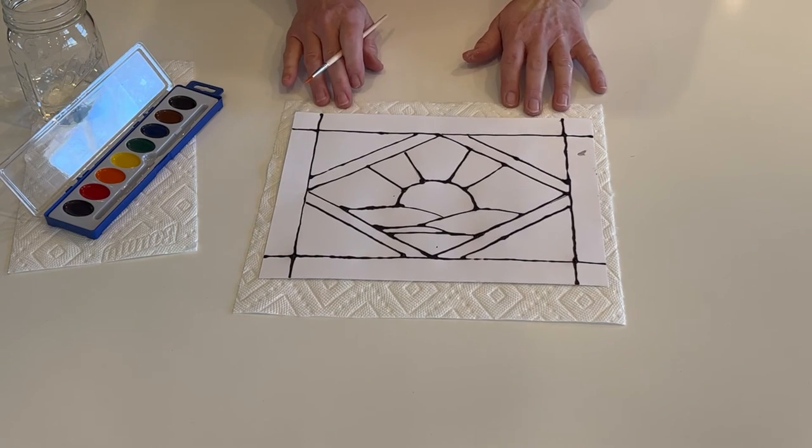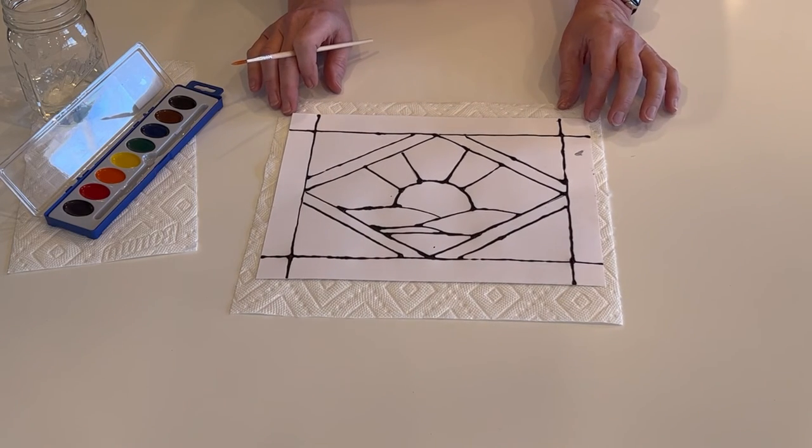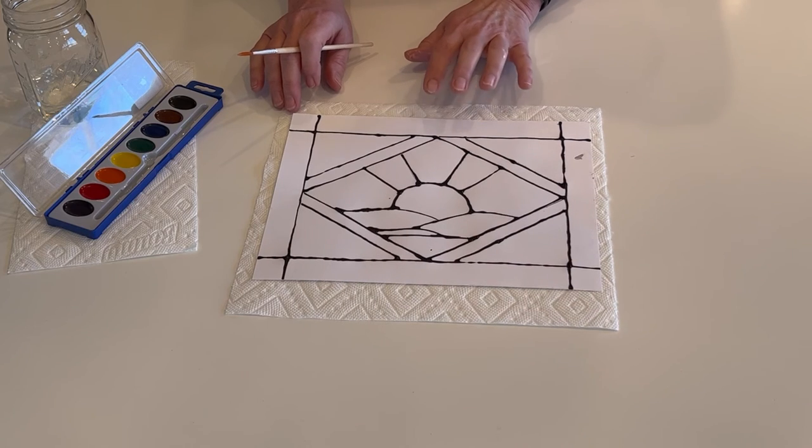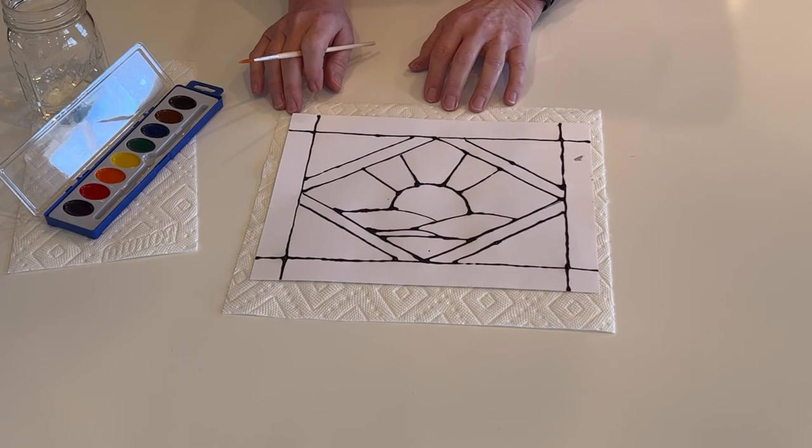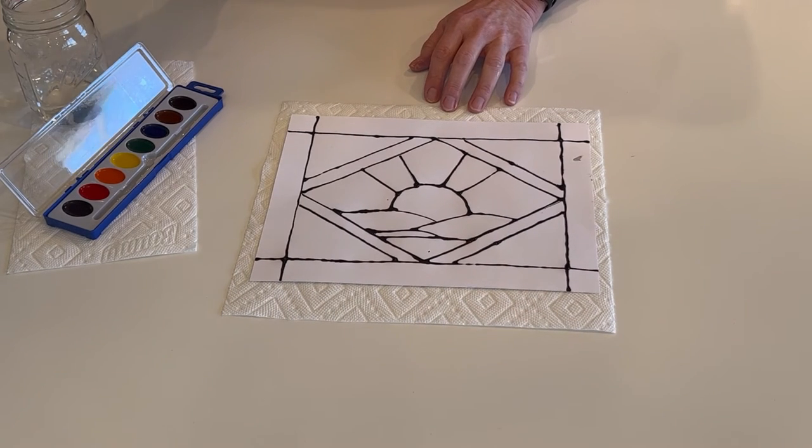But now it's just time to paint. So usually when I use watercolors I make sure I put paper towel underneath the painting because sometimes it gets a little wet so we don't want it to get too soggy. I'm going to add some clean water and that's it. I'm going to get started.